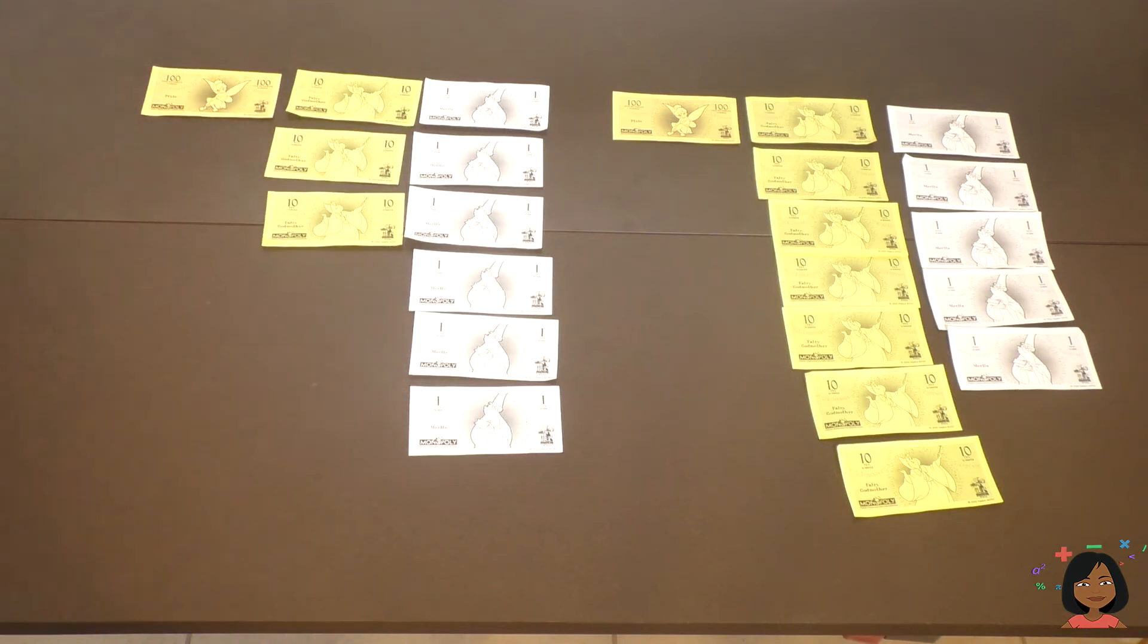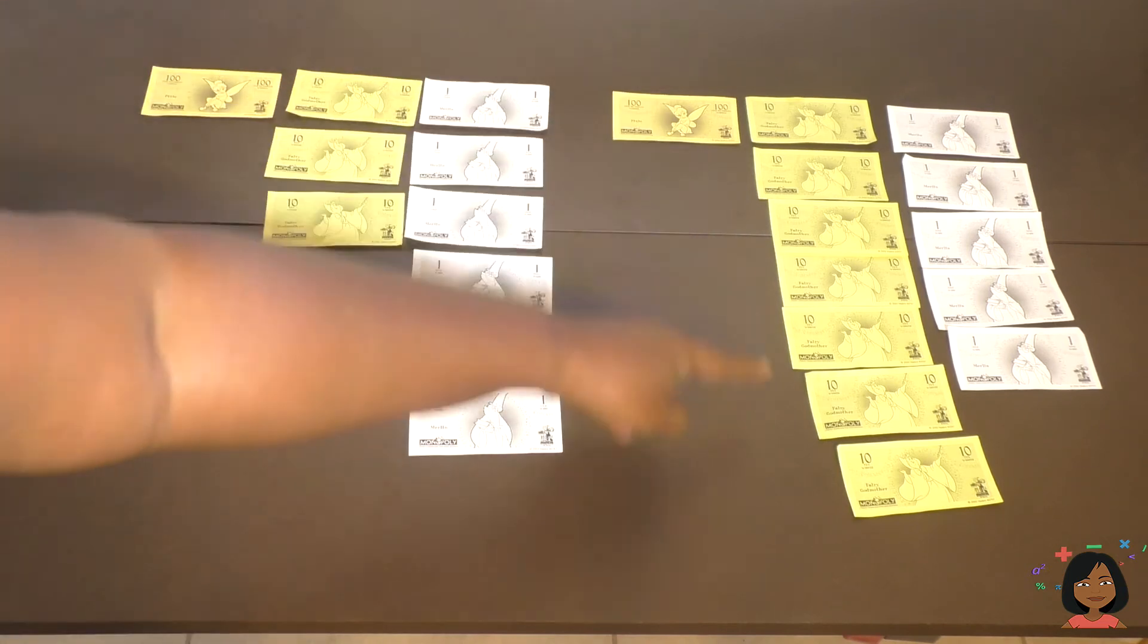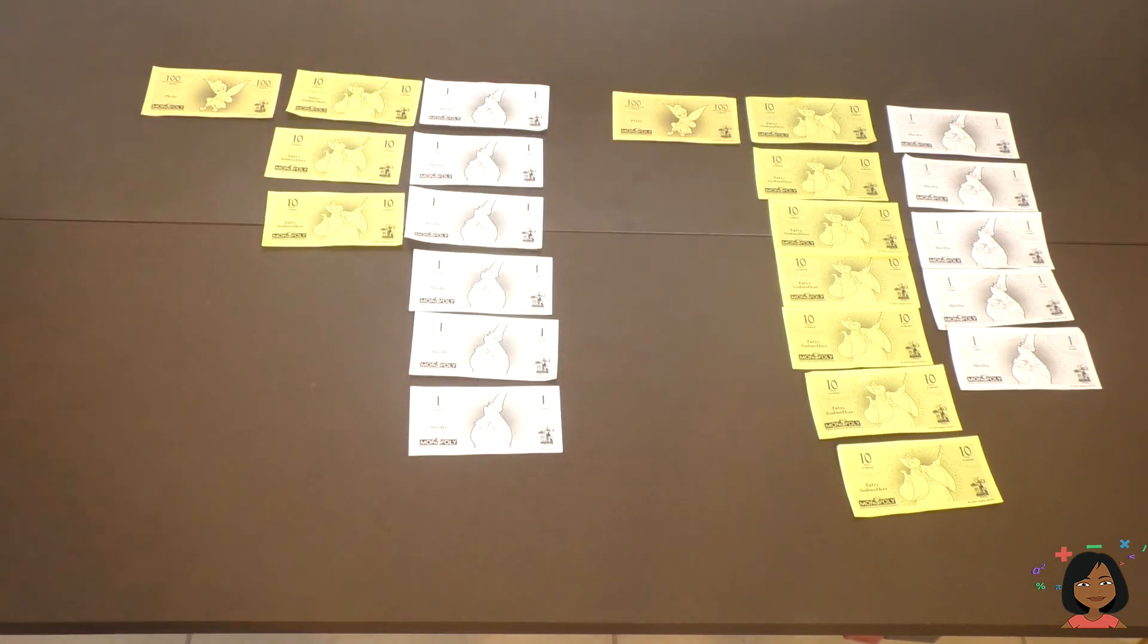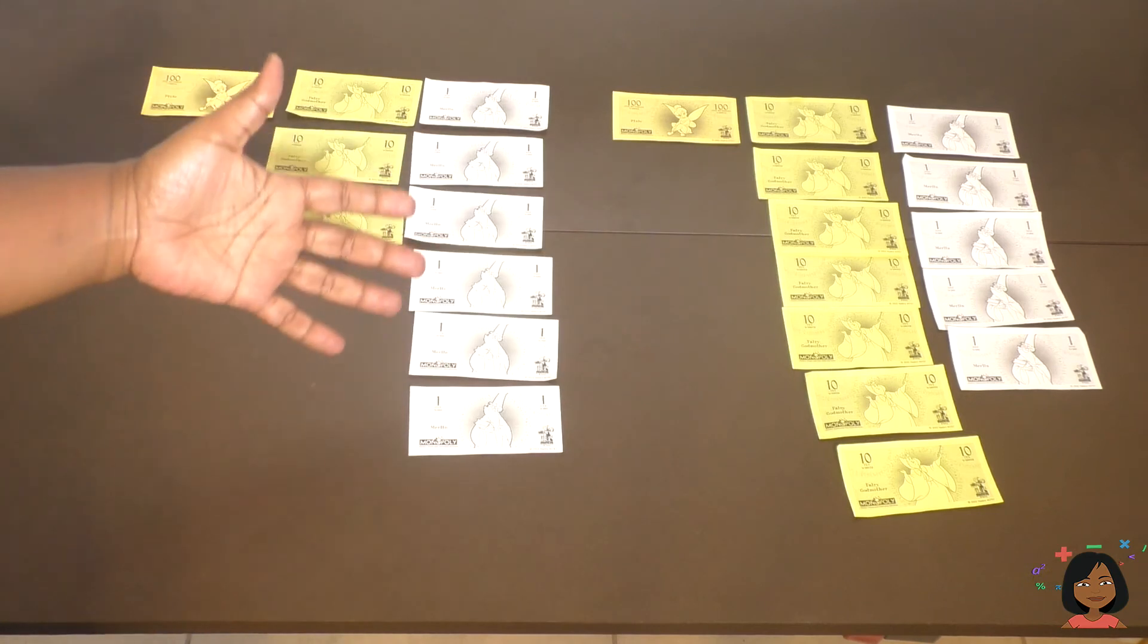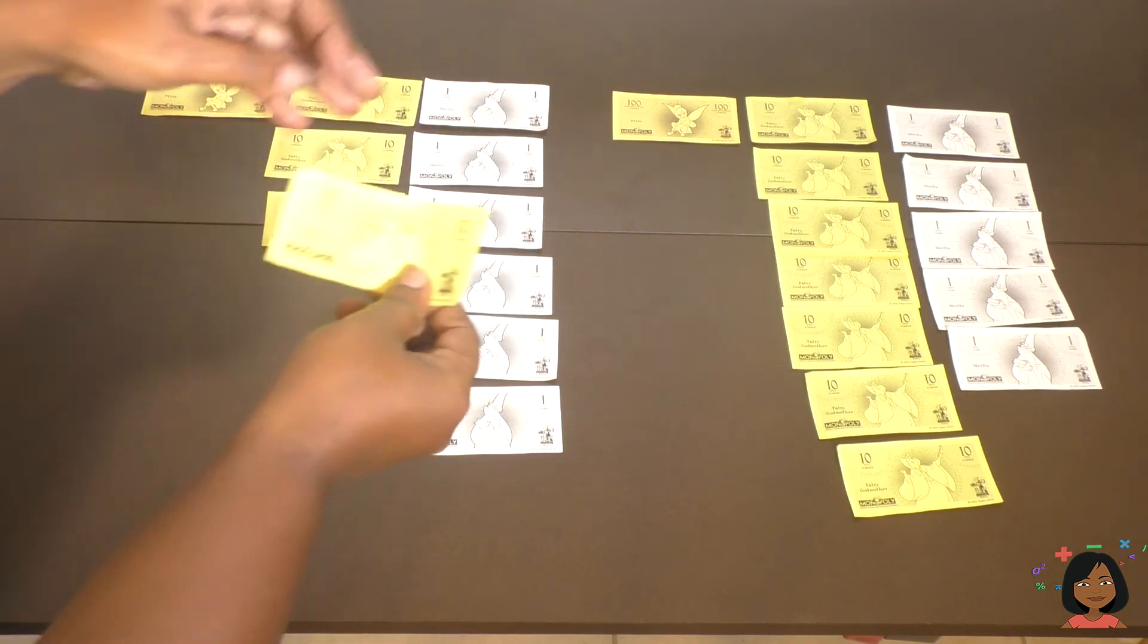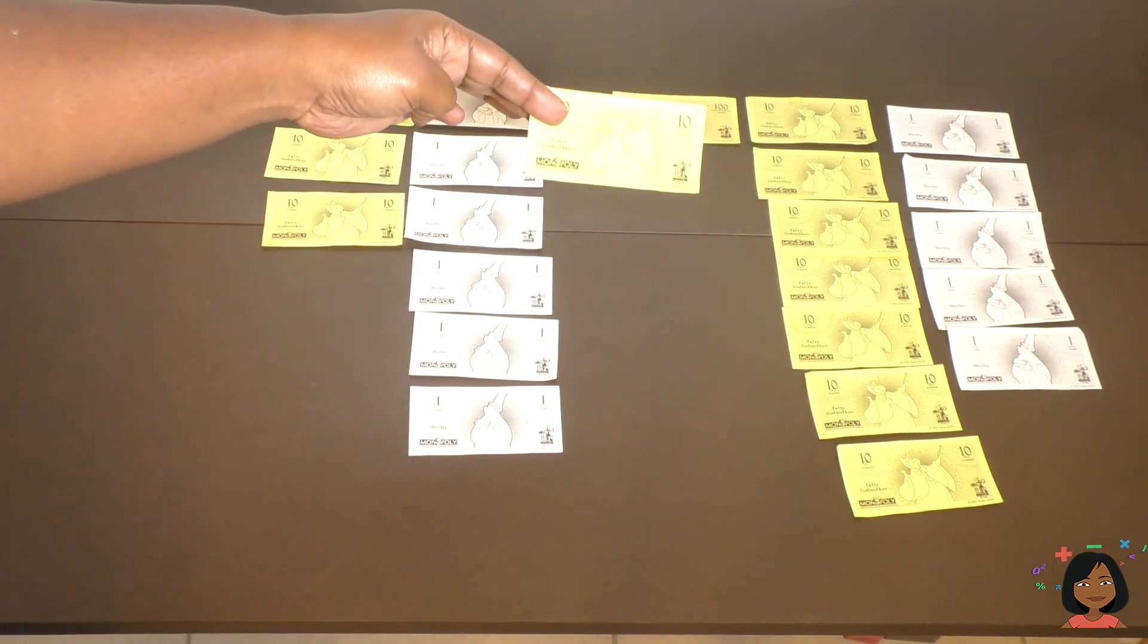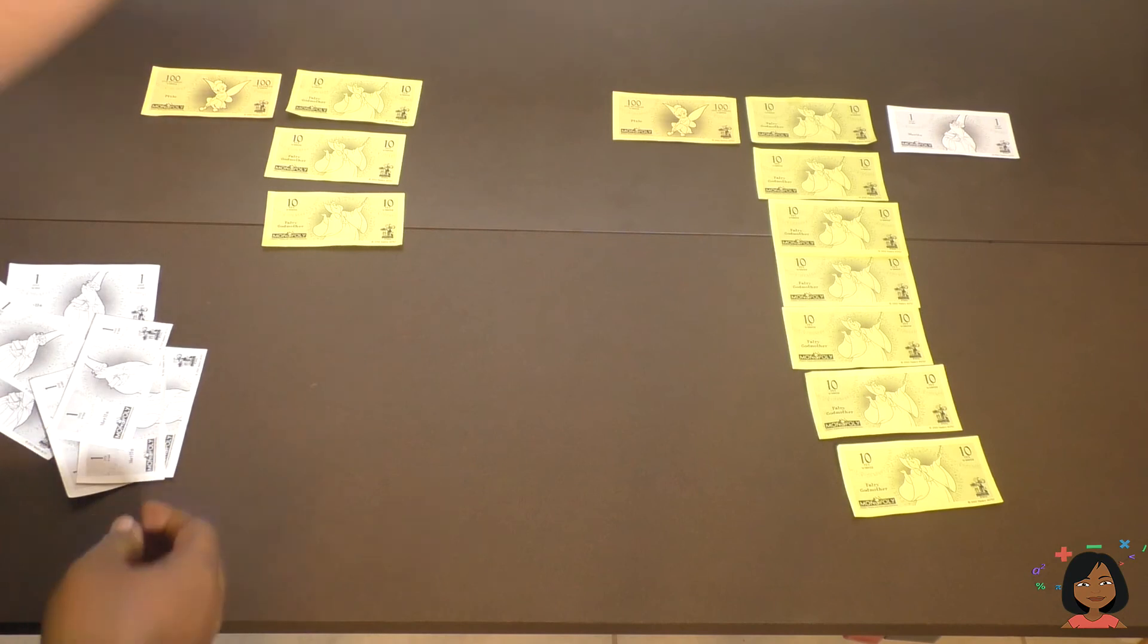We want to add them together, so we always start with the ones place. If we have six ones and five ones, that's a total of eleven ones. That's a whole lot of ones, so why don't we take ten of them away and replace it with a ten dollar bill. Okay, so here we go, get rid of this and get rid of all of these. We have a ten dollar bill in its place.